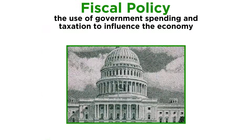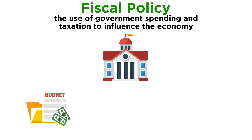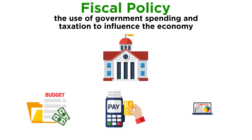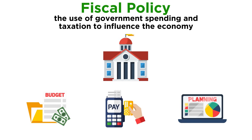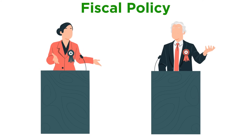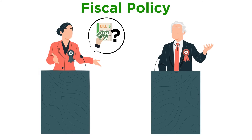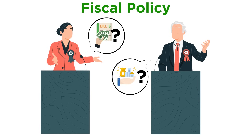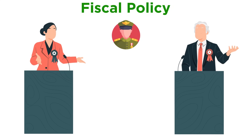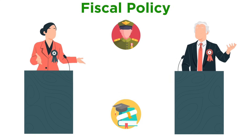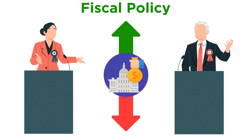Just like any business or household, each year the government has a budget. It has bills to pay, and it has to figure out how to get the money to pay them. Politicians around the world routinely debate not only how they will pay their government's bills, but also how money should be spent for its citizens. They debate how much should be spent on specific programs, such as defense or education, and they also consider how much should be spent in total. Increases and decreases in government spending can have a big effect on a country's total economic output.